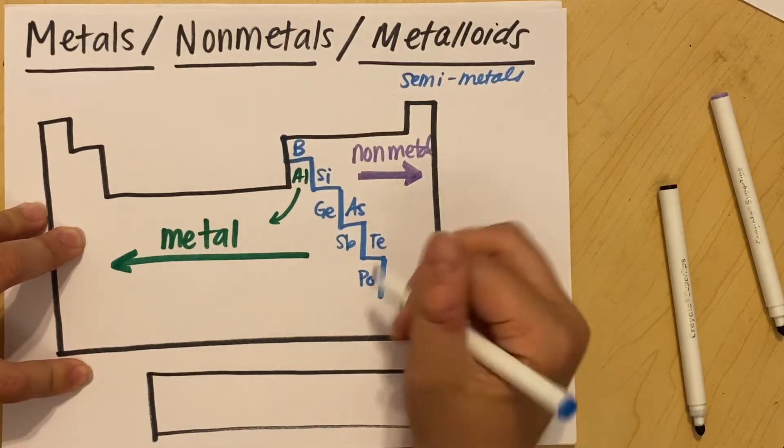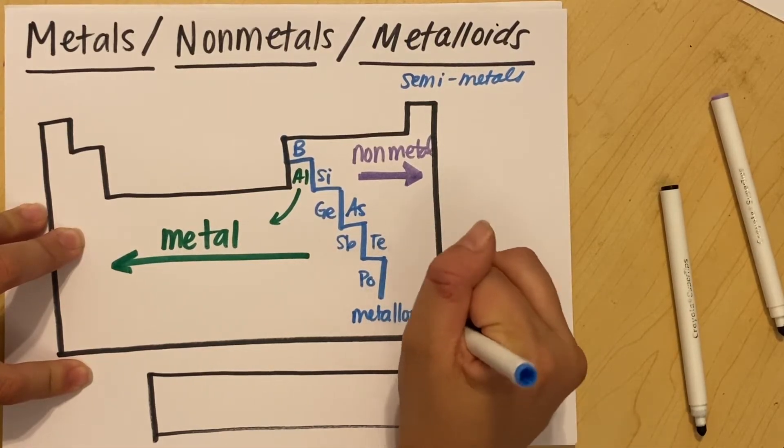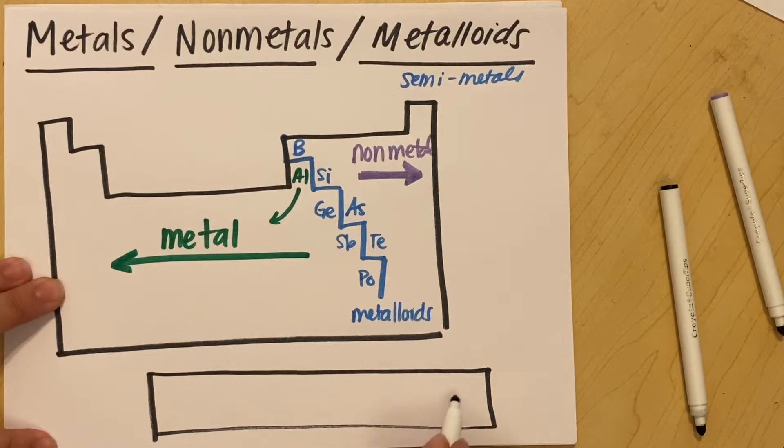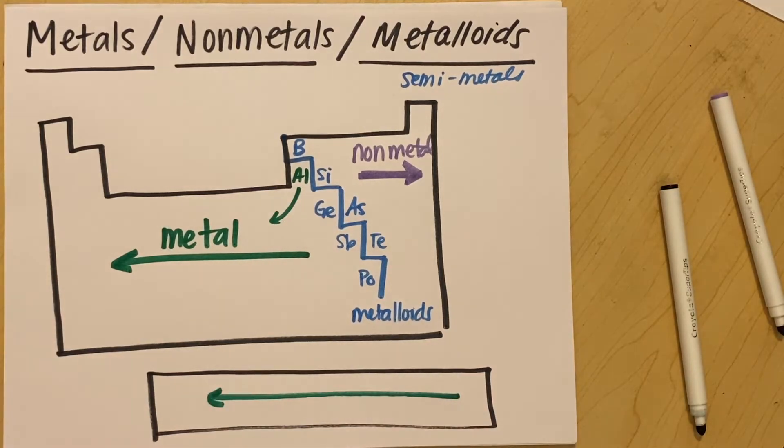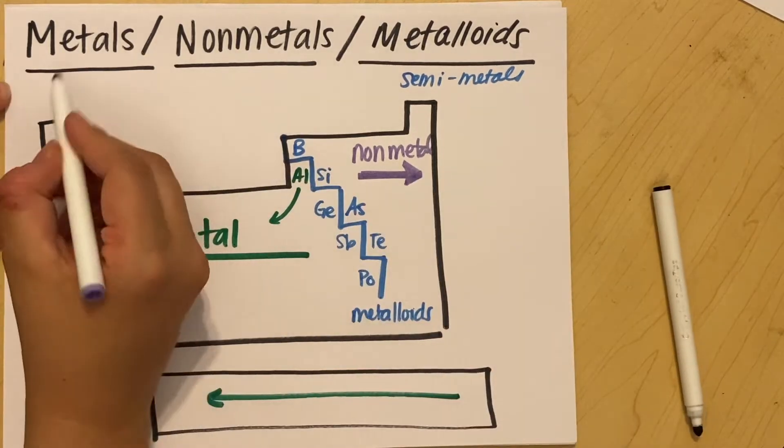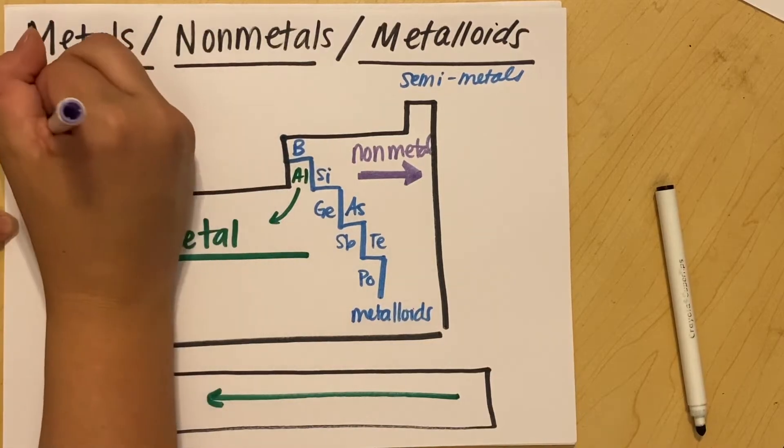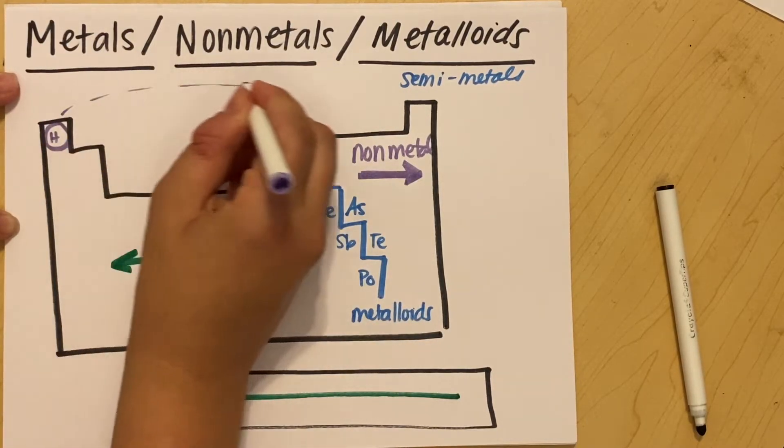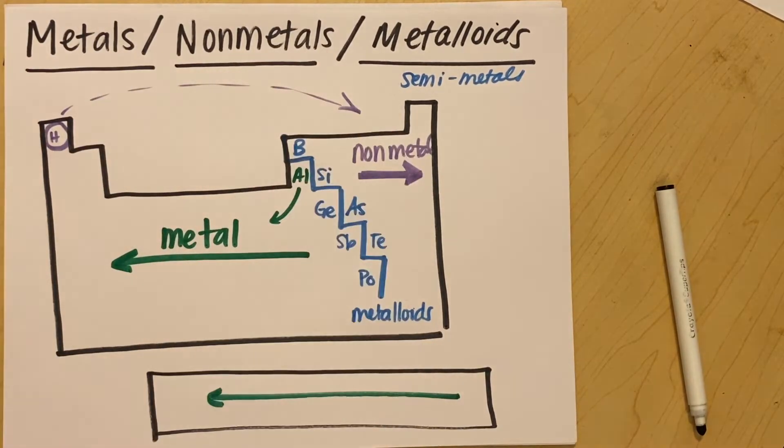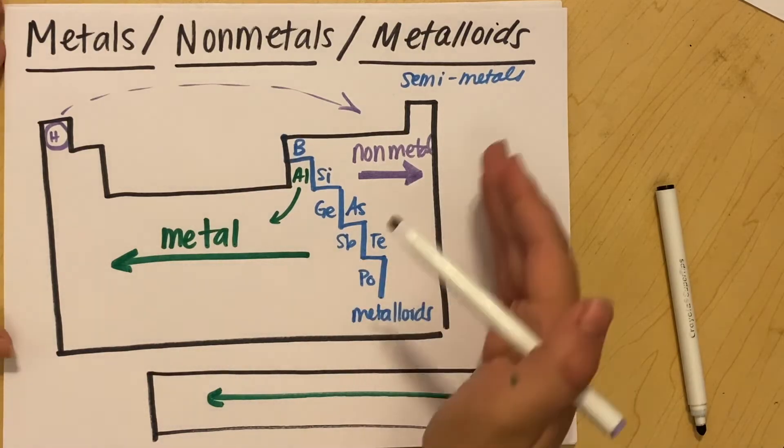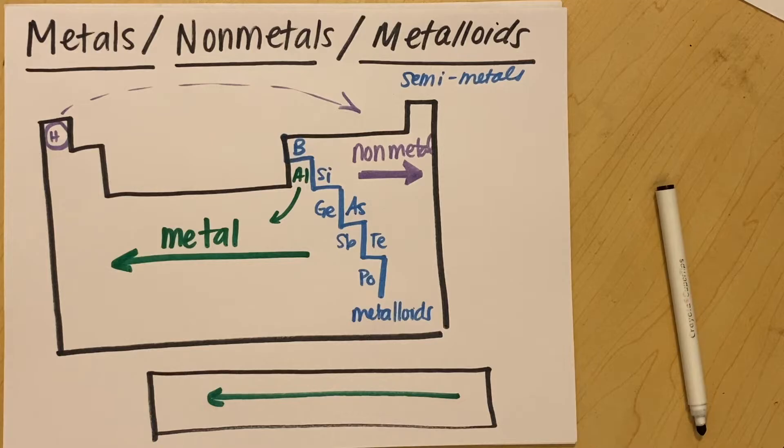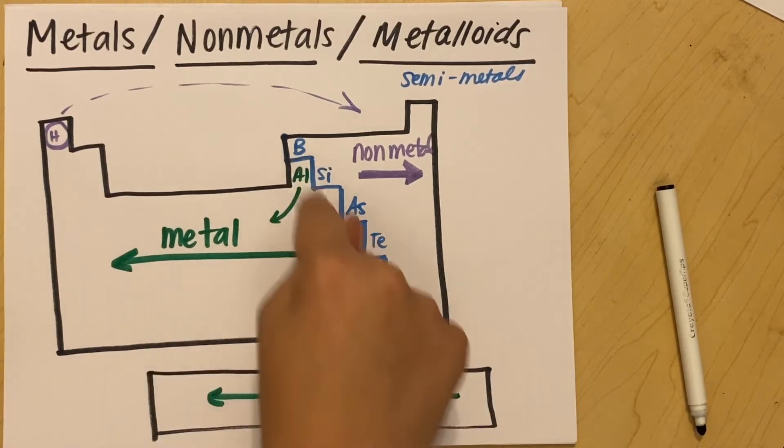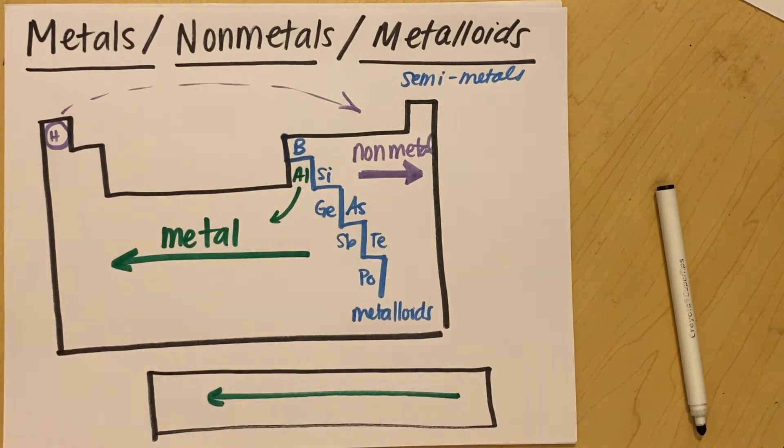But everything else, these are metal as well. And your only little outlier is right here. Hydrogen is technically on the non-metal side. So you should be able to look at your periodic table and determine right away, you know, is something a metal, a metalloid, or a non-metal, just by looking at where it is on your periodic table.